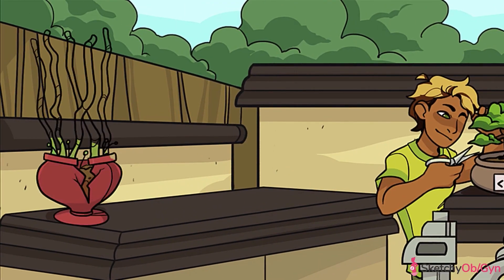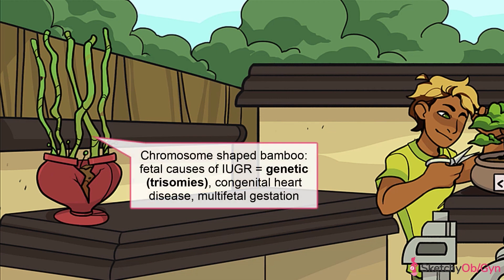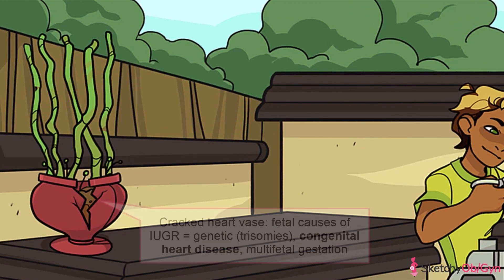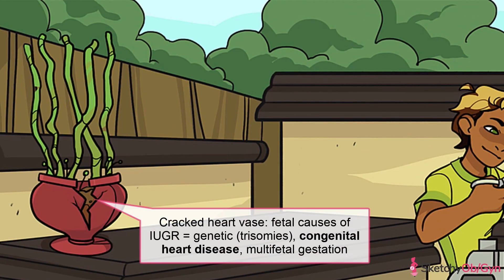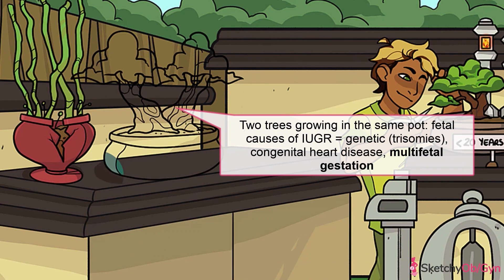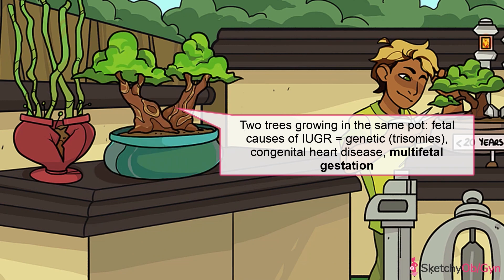Fetal causes of pathologic IUGR include genetic and structural abnormalities and inadequate placental sharing in multifetal gestations. Genetic abnormalities, most commonly aneuploidies — especially trisomies 13 and 18 — cause growth-restricted fetuses, symbolized by our chromosome-shaped bamboo. Structural abnormalities such as congenital heart defects, represented by this cracked heart base, can also lead a fetus to have IUGR, as can unequal sharing of the placenta in monochorionic multifetal gestations, symbolized by these twin bonsais sharing a pot.